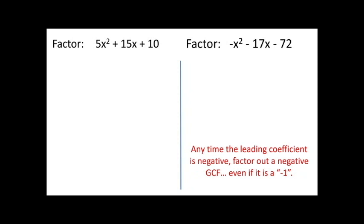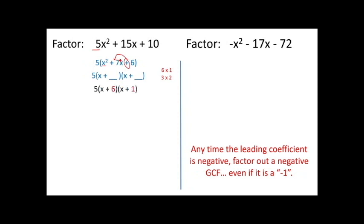Go ahead and try this next pair on your own — I'd recommend pausing the video. For the first one, I always check for GCF first: pulling out the 5 gives a leading coefficient of 1. To factor the remaining trinomial, x times x gives x squared, both signs are plus, and factor pairs of 6 are 6×1 or 3×2 — the only pair adding to 7 is 6 and 1. So the answer is 5 times (x plus 6) times (x plus 1).